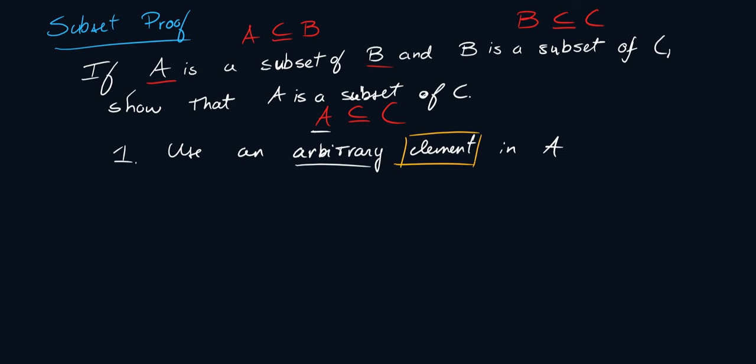So the first line of your proof should be: suppose X belongs to A. So what I'm going to do is I'm going to write the theory in white and the actual proof in yellow. So my first step is I use an arbitrary element in A or whatever subset you're trying to prove that it is an actual subset.